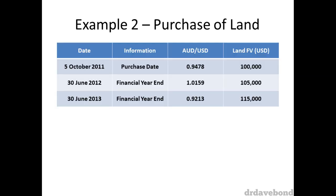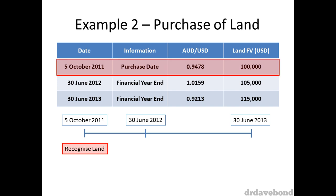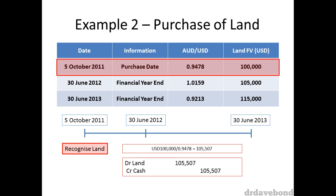To recognize the land is straightforward and works just the same as example 1. Use the spot exchange rate on the date of purchase, which in this case is 0.9478, and gives an AUD value of $105,507.